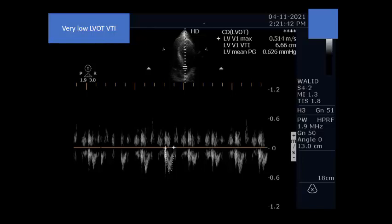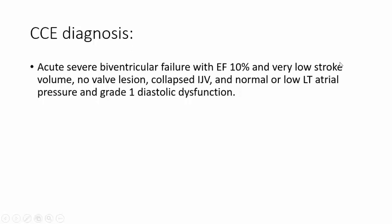These are the four sequential steps to perform when you see a patient with heart failure and shock. The full critical care echocardiography diagnosis is: acute severe biventricular failure with ejection fraction approximately 10% by visual assessment, very low stroke volume (LVOT VTI 6.6 cm), no significant valve lesion, collapsed internal jugular vein, normal or low left atrial pressure, and grade 1 diastolic dysfunction. Therefore, this patient's picture is not straightforward cardiogenic shock — there is clearly another element reducing systemic pressure and left ventricular preload.